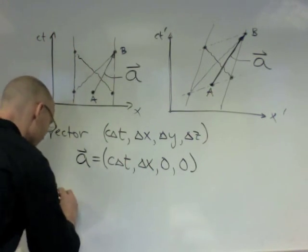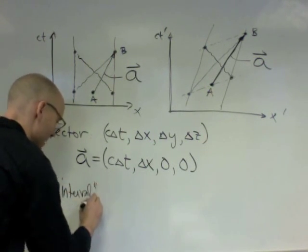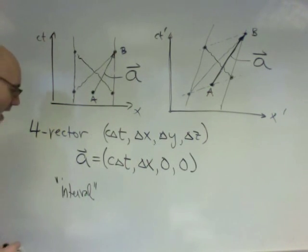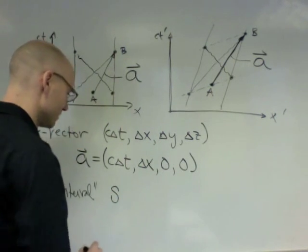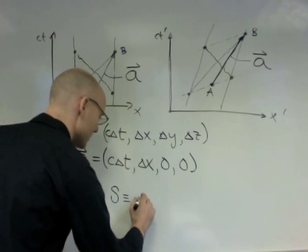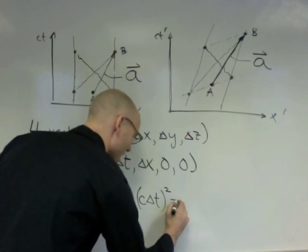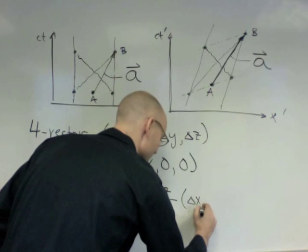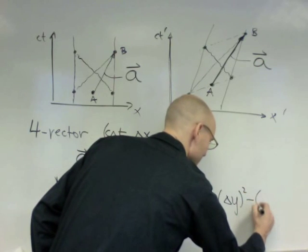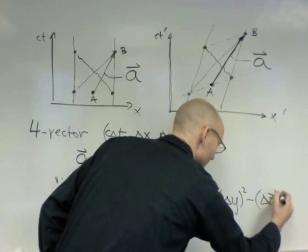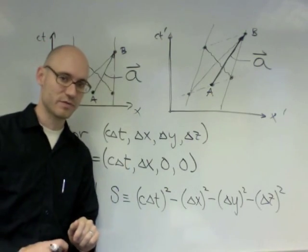The only question is what are its components and what are the conserved quantities? And what we learn is the interval, the interval associated, there's an interval, what's called the space-time interval, associated with a is, and we usually call it s, is c delta t squared minus delta x squared minus delta y squared minus delta z squared. And this is a conserved quantity when we make this Lorentz transformation.